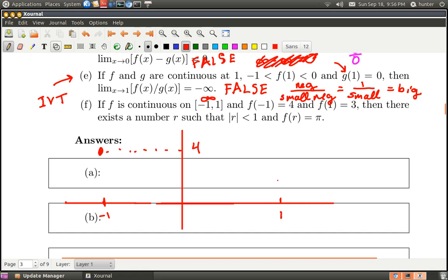Then there exists a number r with absolute value less than one—in other words, some r between negative one and one. What's interesting about r is that f(r) equals pi. This is really just the Intermediate Value Theorem. Remember what it says: pi is some number between three and four. So I'll draw a line at pi on the y-axis.